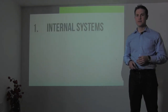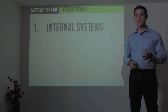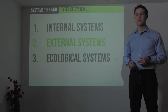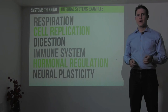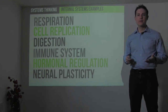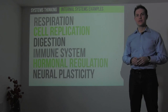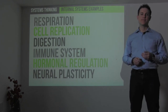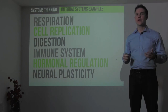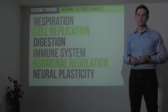There are three types of systems: internal systems, external systems, and ecological systems. Internal systems are the systems at work inside our bodies — effectively anatomical systems. Things like respiration, cell replication, digestion, the immune system, hormonal regulation, and neuroplasticity.